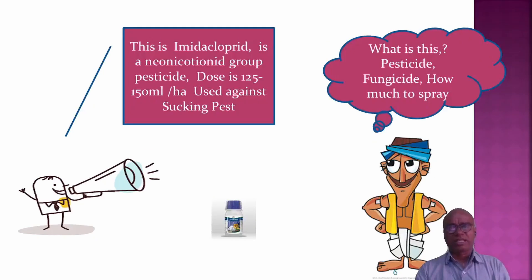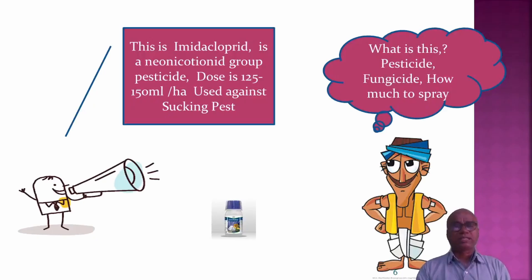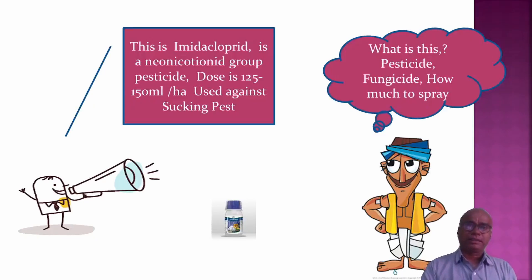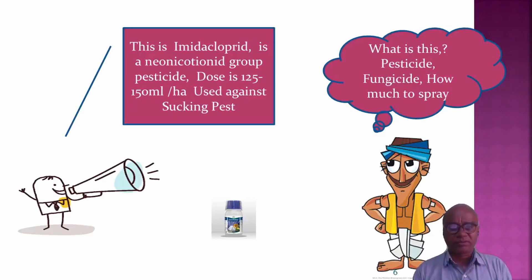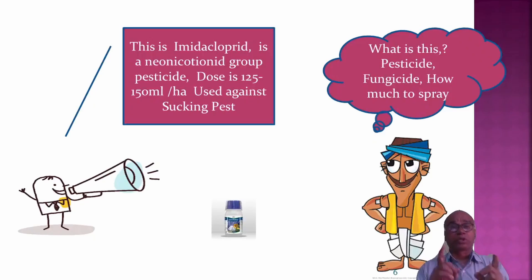For example, this is imidacloprid. The farmer wants to know: what is this chemical? Someone should be there to tell us — this is imidacloprid, it belongs to the neonicotinoid group, the dosage is 125 to 150 ml per hectare, and it can be used as a systemic pesticide.